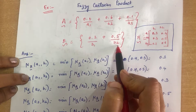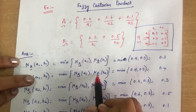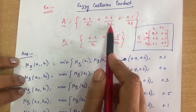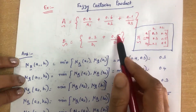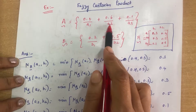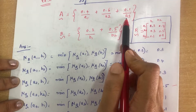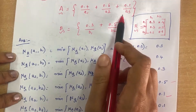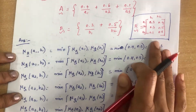For a2 and b1: minimum of 0.6 and 0.3 = 0.3. For a2 and b2: minimum of 0.6 and 0.5 = 0.5. For a3 and b1: minimum of 0.1 and 0.3 = 0.1. For a3 and b2: minimum of 0.1 and 0.5 = 0.1.